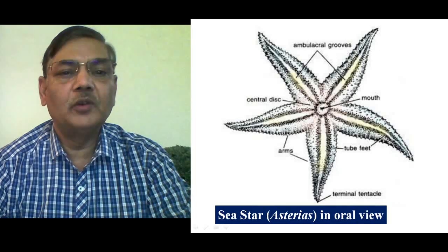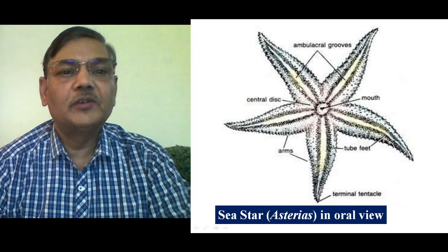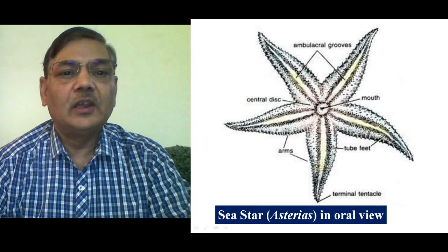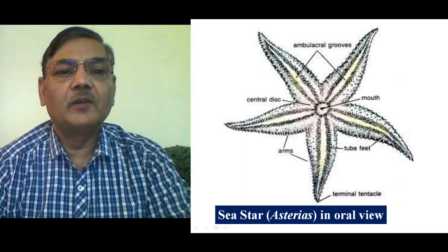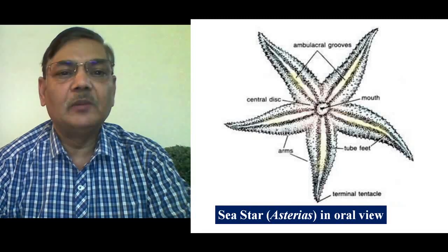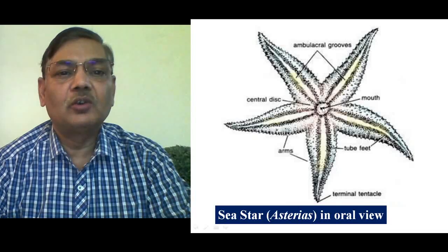In oral view, you can see mainly the presence of the ambulacral groove. Pedicellaria are found on both surfaces of the animal, oral as well as aboral. On the oral surface, you can see the centrally located mouth.